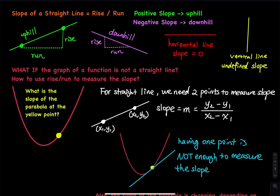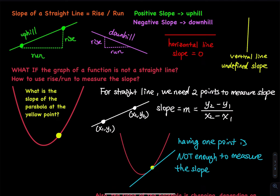For a straight line, rise over run is easy. If you have two points, you don't even need a graph. If I give you two points — point one (x1, y1) and point two (x2, y2) — then all you have to do is calculate: slope equals y2 minus y1 divided by x2 minus x1. You can get the slope without drawing any picture, or you can use a graphing paper, point out the coordinates, plug into the formula, and calculate the slope. But this is still for straight lines only.